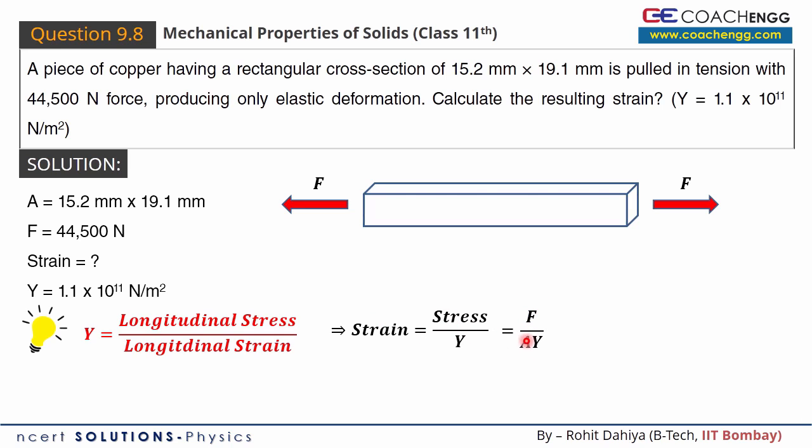Stress is force per unit area, so strain equals F upon A times Y, which is 44,500 Newtons. Cross-sectional area here is 15.2 into 19.1. Because this is mm, the standard unit is meters, so 10^-3 here we have to multiply, here 10^-3 here we have to multiply. And Young's modulus value from the question was 1.1 × 10^11.